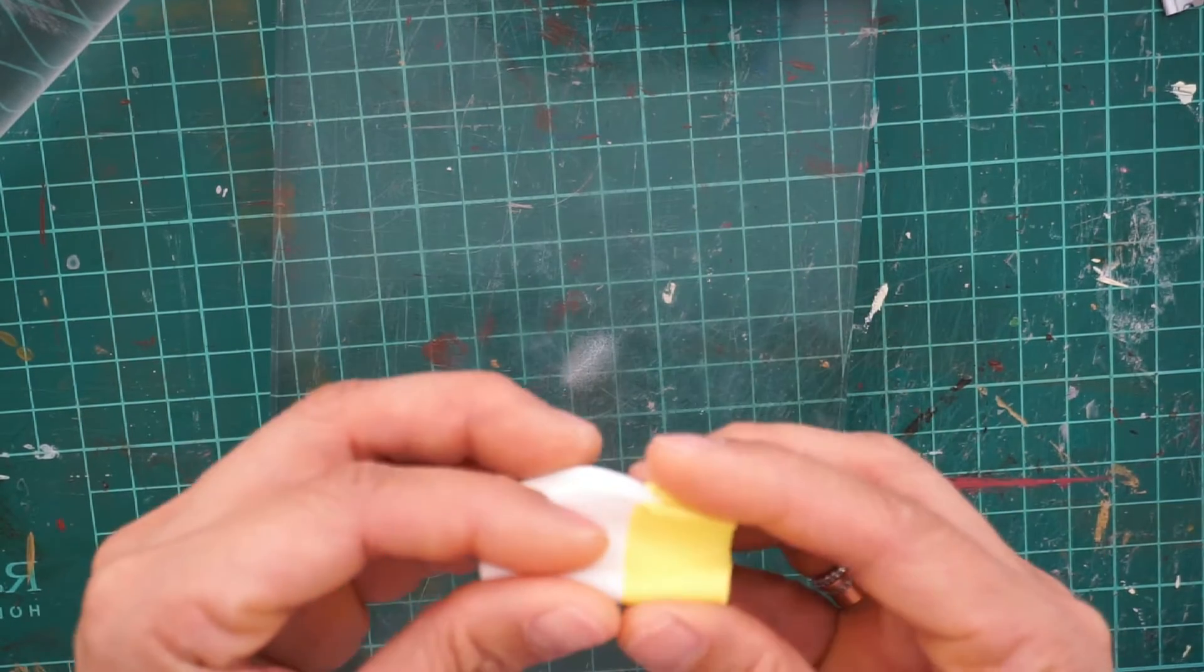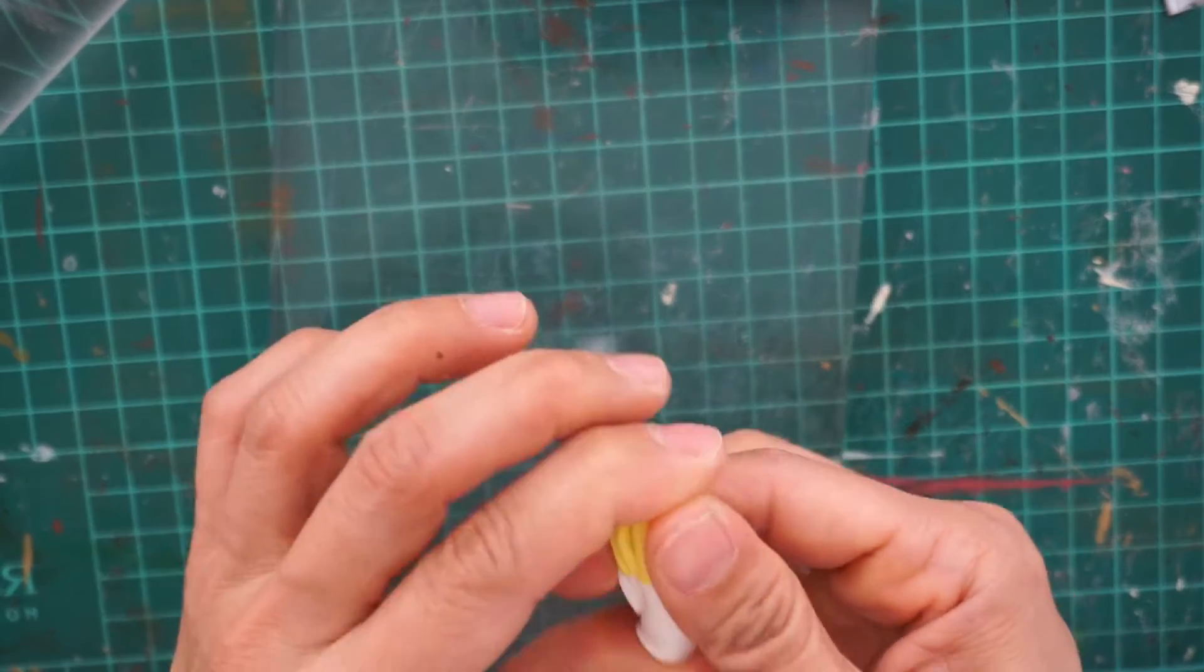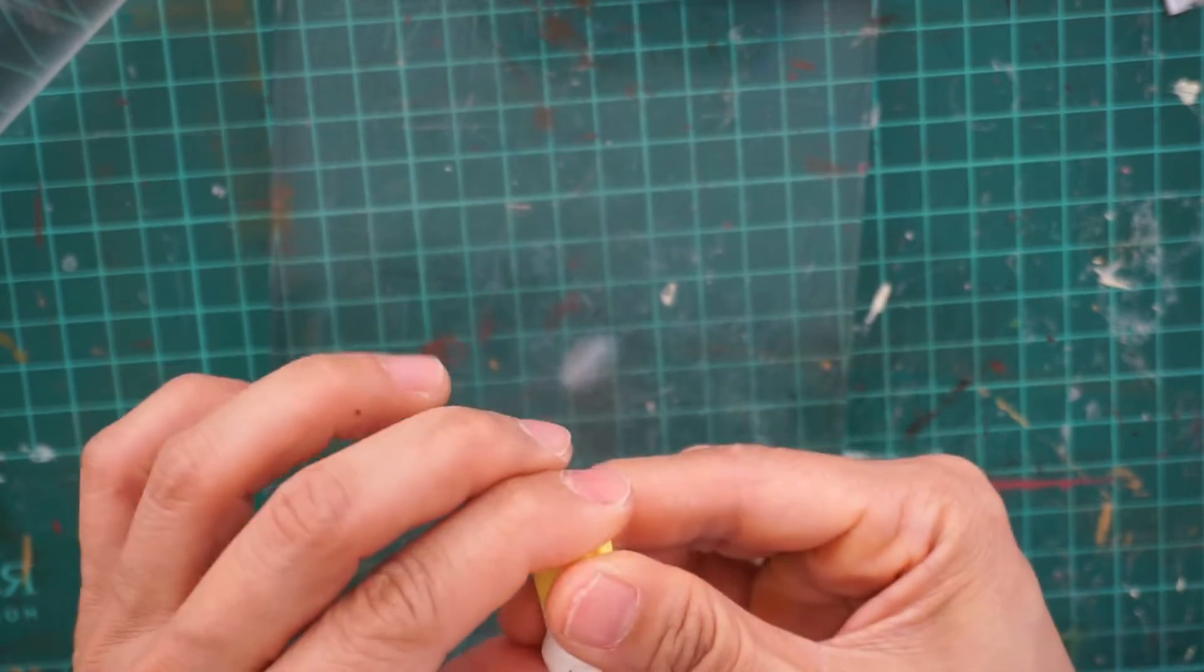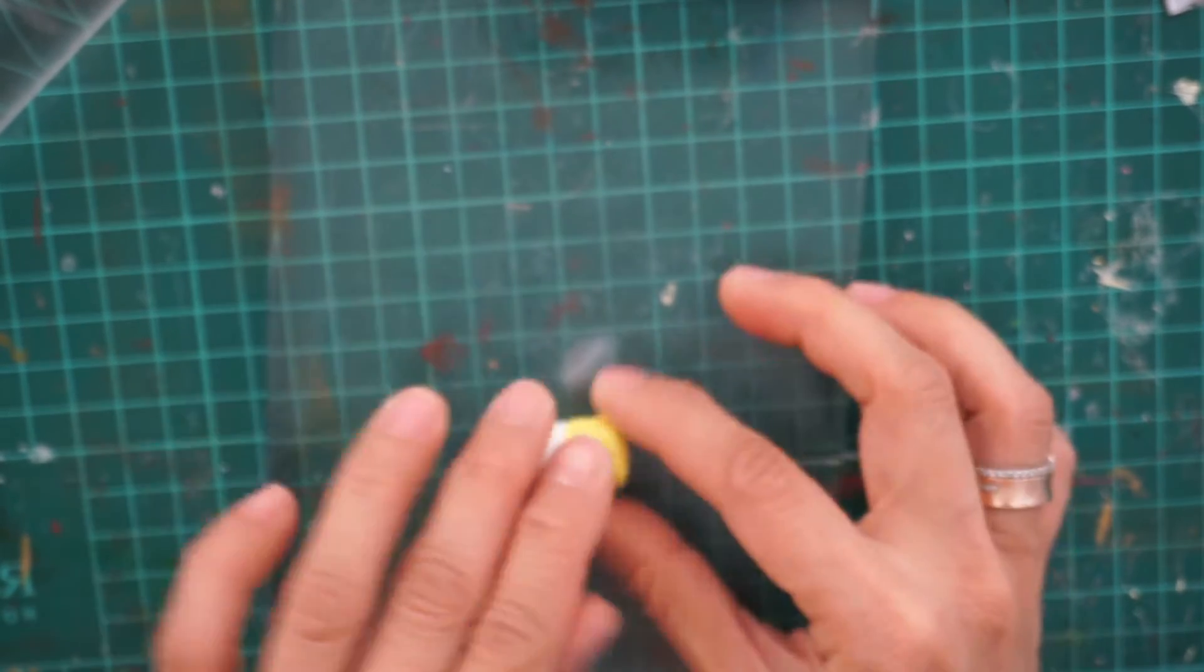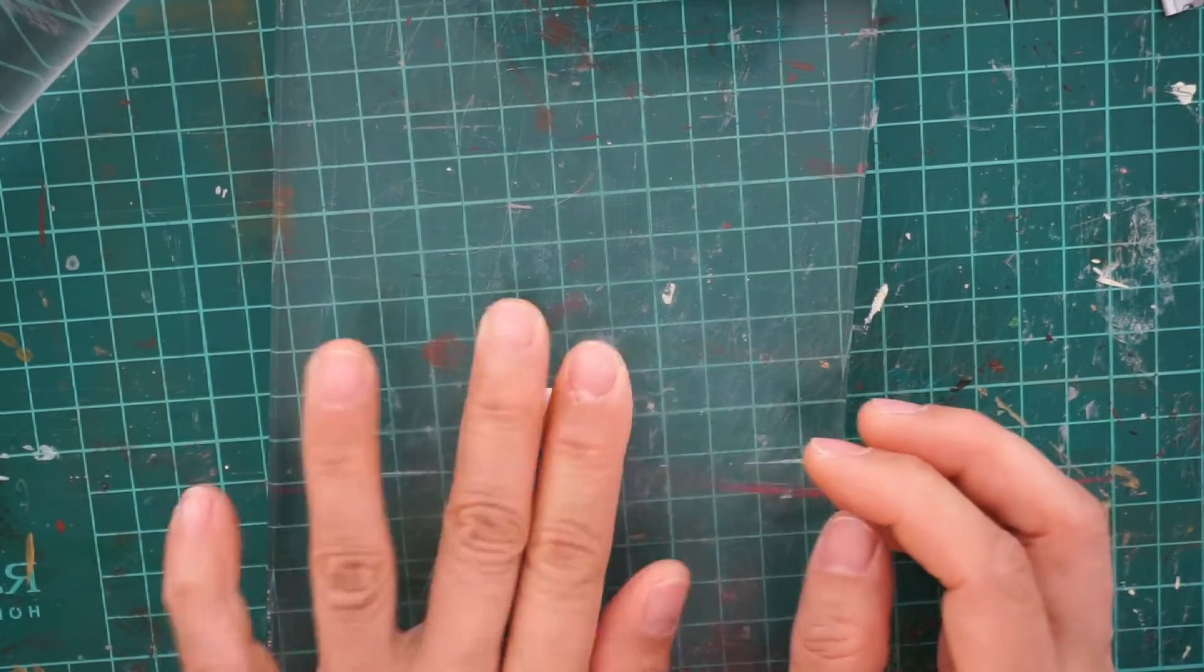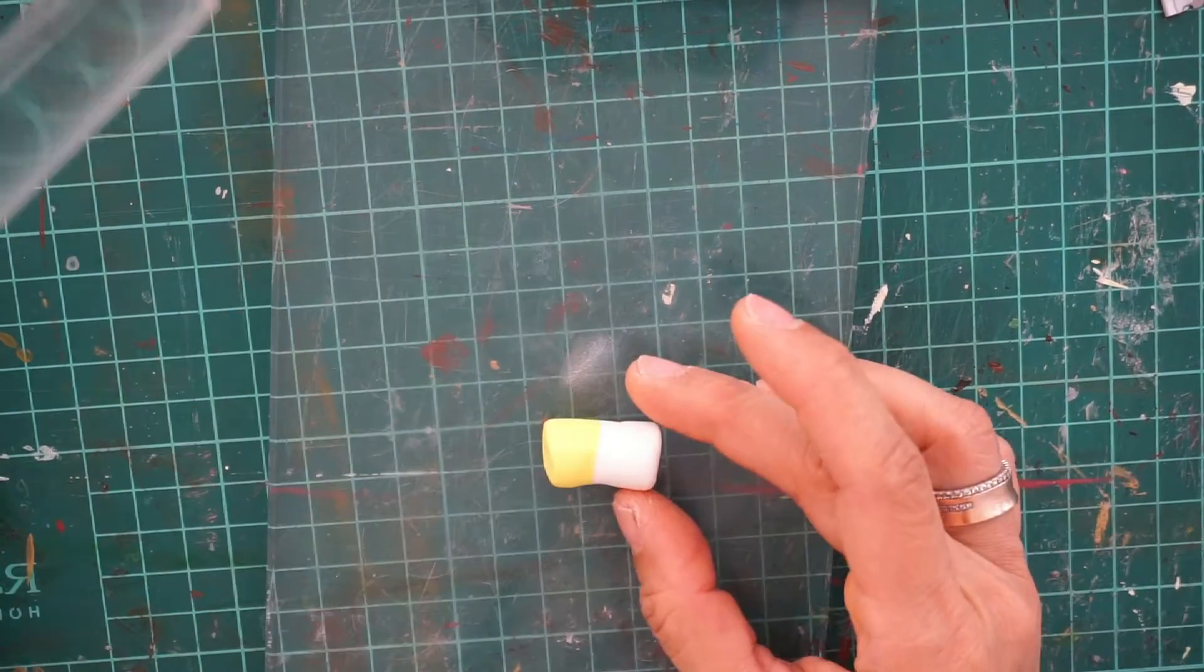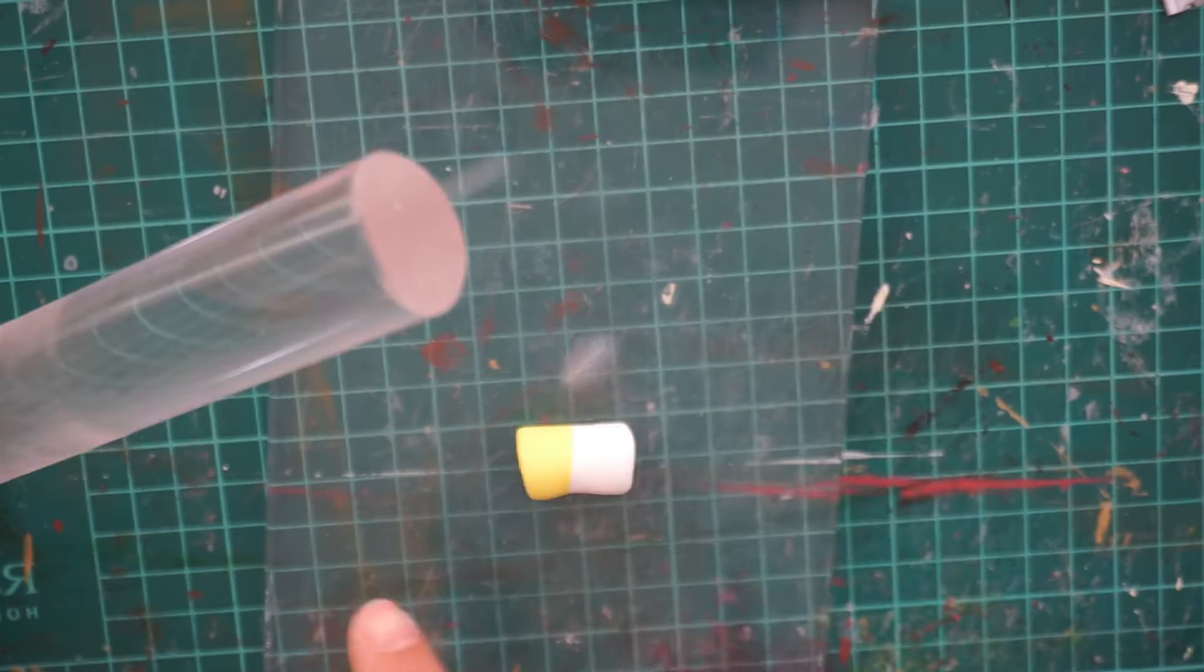Press both ends with your fingers and also the sides, then roll it on the table using your fingers. Do this motion several times. Take your rolling pin.